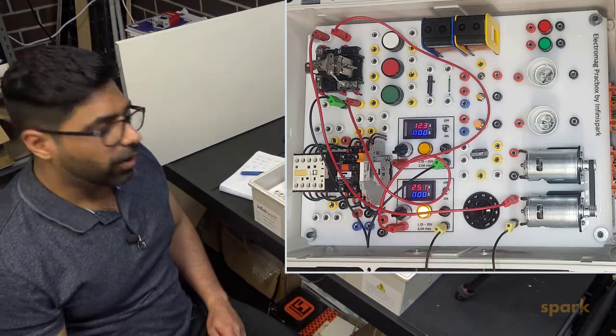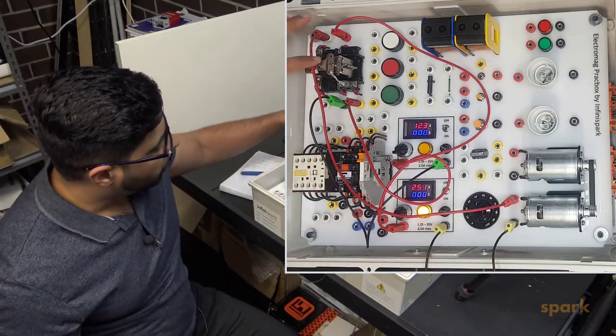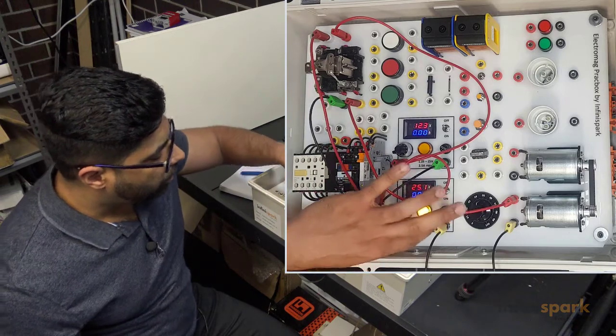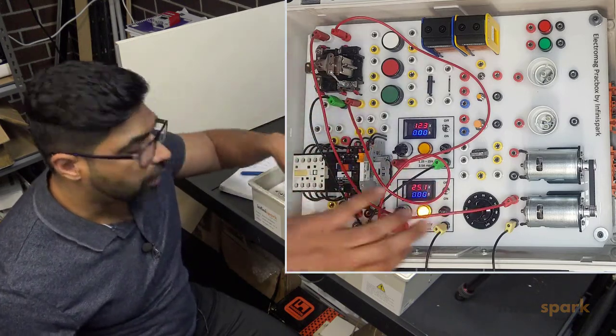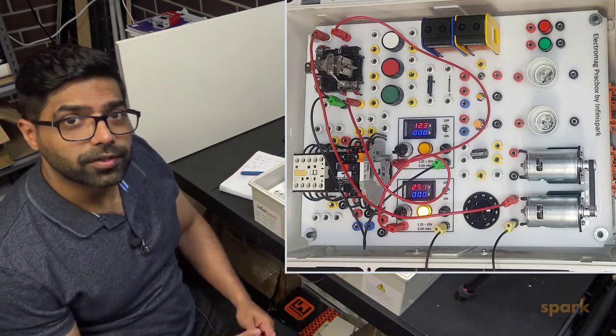You can see how when I energize the relay, the contact closes and our power supply here then supplies current through this contact and powers this motor. Let's see it again.